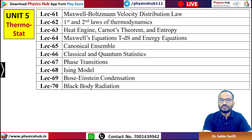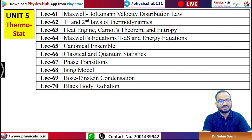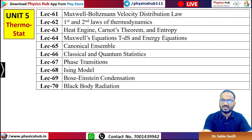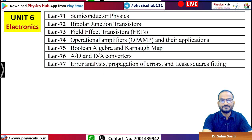Unit 5 is Thermal and Statistical Physics. It covers the Maxwell-Boltzmann velocity distribution law, first and second laws of thermodynamics, heat engines, Carnot's theorem, entropy, Maxwell's relations, TdS equations, energy equations, canonical ensembles, classical and quantum statistics, phase transitions, Ising model, Bose-Einstein condensation, and blackbody radiation.